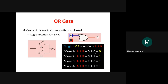OR gate cases: 0 OR 0 gives output 0. If B is closed: 0 OR 1, output is 1. A closed, B open: 1 OR 0, output still is 1. Both switches closed: output is 1. Conclusion: in OR gate, if any one input is 1, output is 1. In AND gate, if any one input is 0, output is 0.